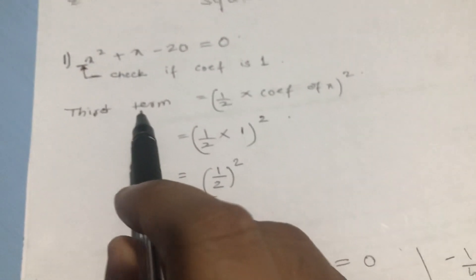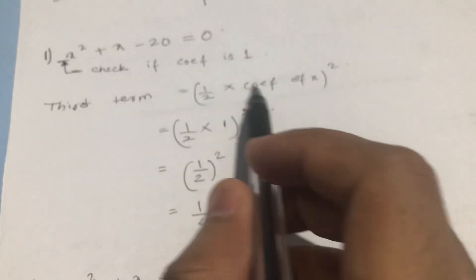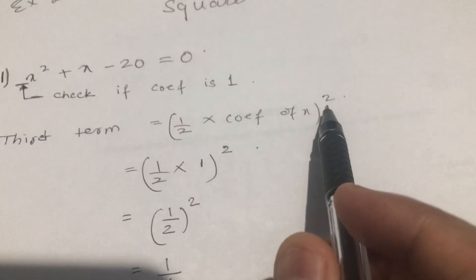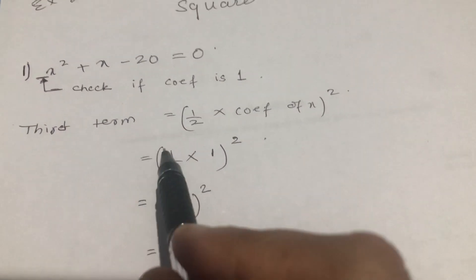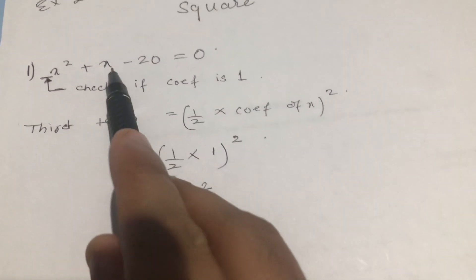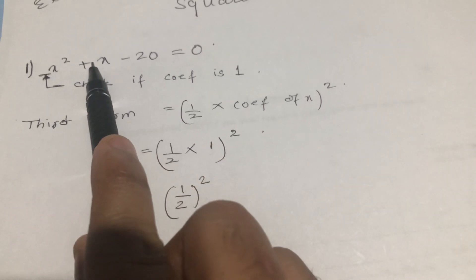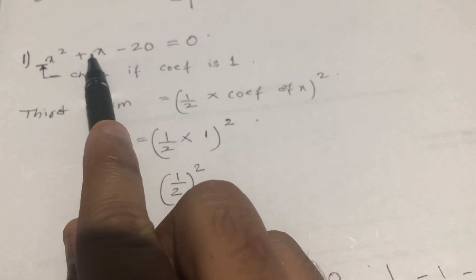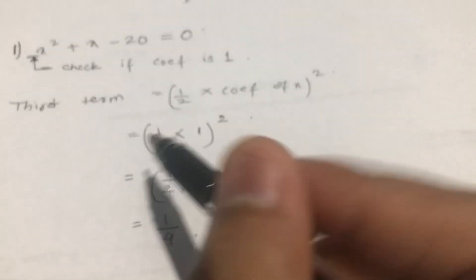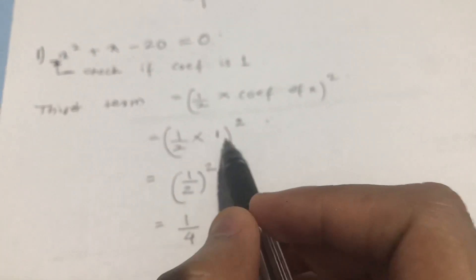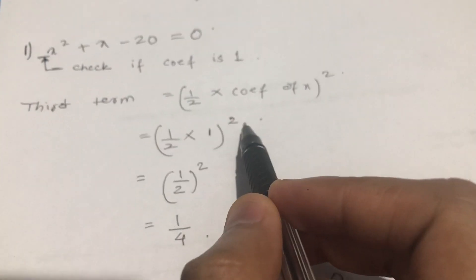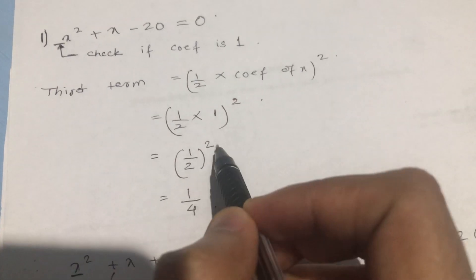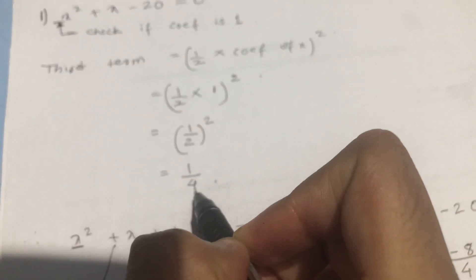Please pay attention: the third term is equal to half into coefficient of x, the whole square. So that is half into the coefficient of x — here there is nothing, so it is 1. It is half into 1, the whole square, which equals half squared, that is 1 upon 4.